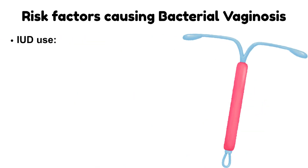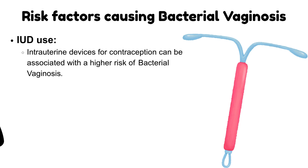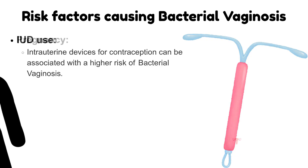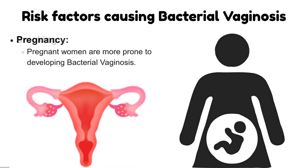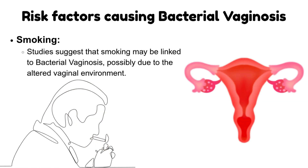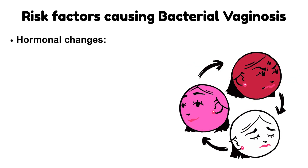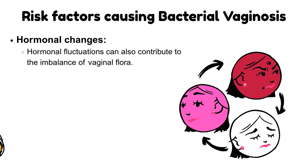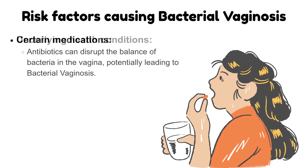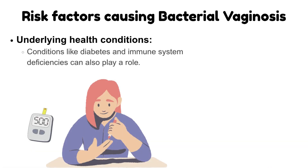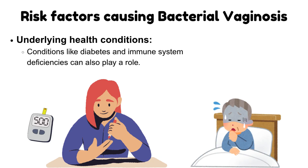Intrauterine device (IUD) use for contraception can be associated with a higher risk of bacterial vaginosis. Pregnancy: pregnant women are more prone to developing bacterial vaginosis. Smoking may be linked to bacterial vaginosis, possibly due to an altered vaginal environment. Hormonal fluctuations can also contribute to imbalance of vaginal flora. Certain medications such as antibiotics can disrupt the balance of bacteria in the vagina. Underlying health conditions like diabetes and immune system deficiencies can also play a role.